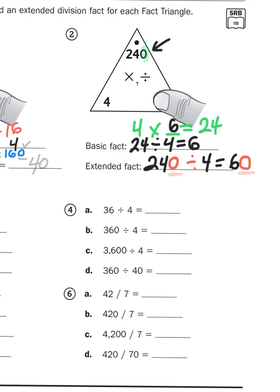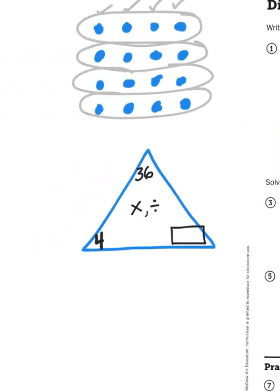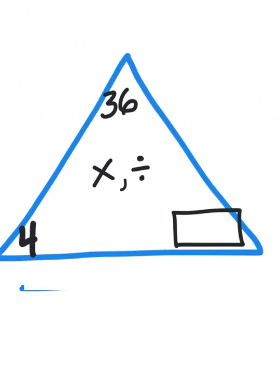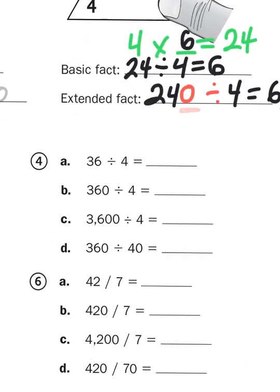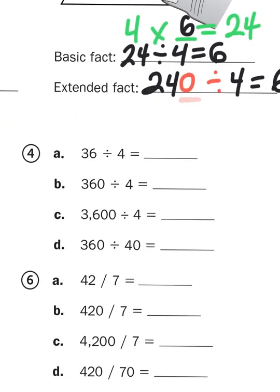So the first thing we have to do is we have to remind ourselves what times 4 gives me 36. So I have a fact triangle set up here. I've got my product at the top, 36. I've got one of the factors, 4. Now I've got to remind myself what times 4 gives me 36. Well, at this point you've probably already remembered that it's 9. 9 times 4 gives me 36, so I'm just going to plug in 9 right here.